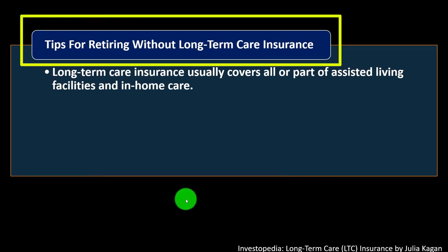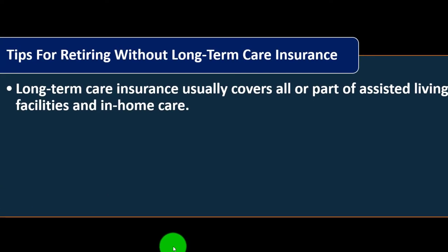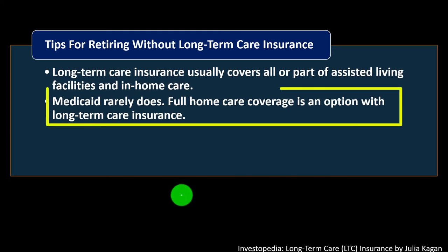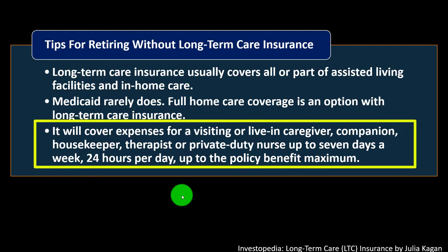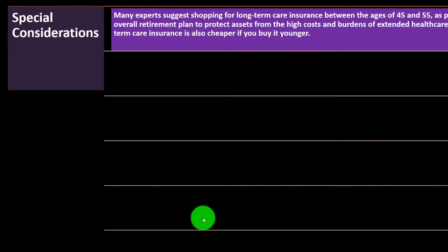Long-term care insurance usually covers all or part of assisted living facilities and in-home care, whereas Medicaid rarely does. Full home care coverage is an option with long-term care insurance — it will cover expenses for a visiting or live-in caregiver, companion, housekeeper, therapist, or private duty nurse, up to seven days a week, 24 hours per day, up to the policy benefit maximum.